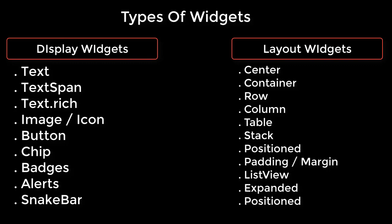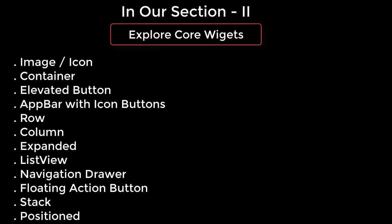In our upcoming videos of section 2, we will start with the image widget — we will learn how to create an image icon. Then we will create a button, which is the elevated button. Then we will move to the app bar, which will contain a leading icon, text widget, and action buttons or icon buttons. From the app bar we will move to scaffold, and to learn more about scaffold we will create a navigation drawer and a floating action button. Then we will move toward container, card view, row and column, and after that we are going to create the stack widget, expanded widget, and position widget. So basically this section 2 will be a bit long but a very interesting and very important part of our Flutter basic crash course.